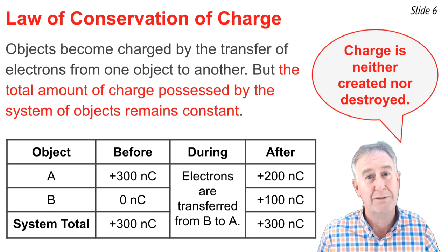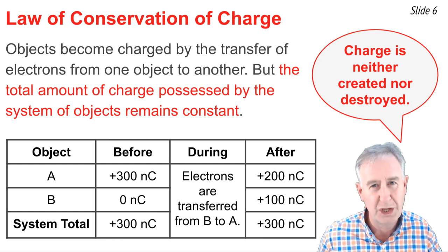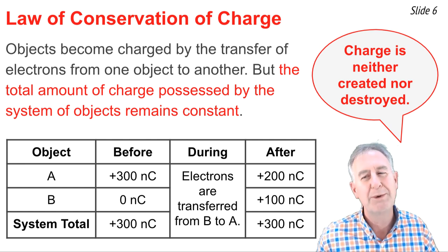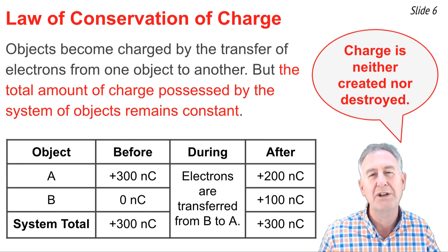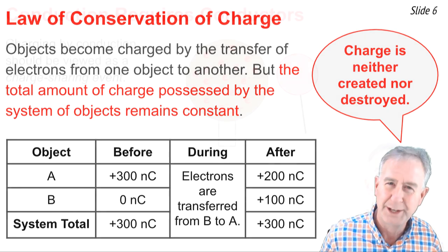So if you check the bottom row, you see the law of conservation of charge, that the total amount of charge possessed by the system remains unchanged or is constant. One way we sometimes put this is that charge is neither created nor destroyed, but only transferred from one object to another object.